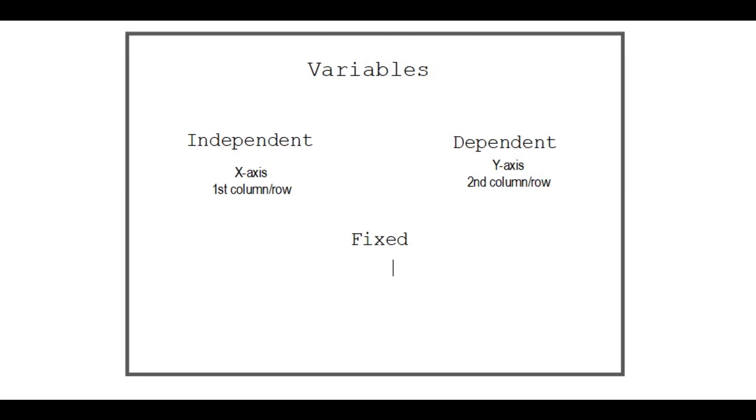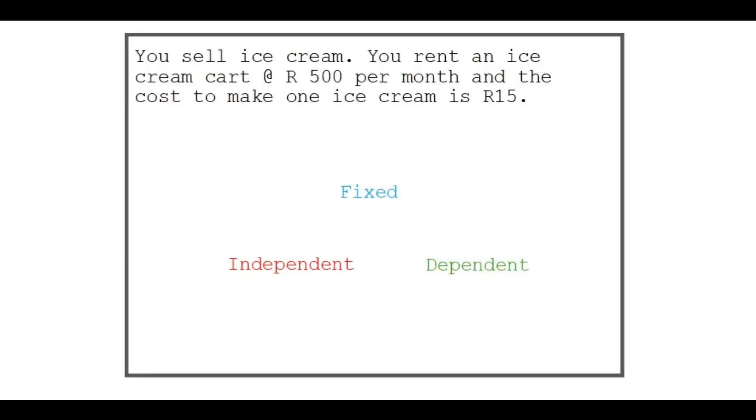Now a fixed variable, you'll only be able to see that on a graph, so not necessarily a table. And it will be when the graph starts at any point that is not zero. So we're going to look at an example of this fixed variable.